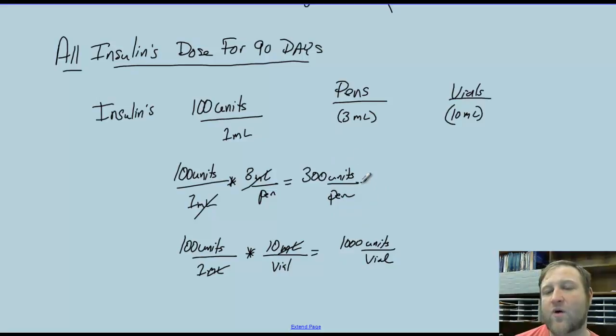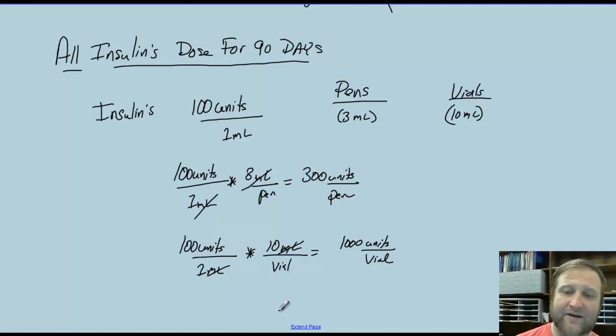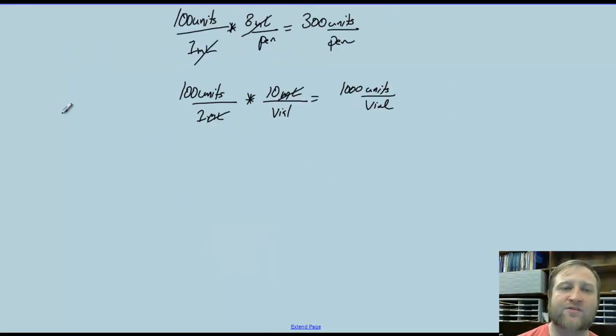If we look at vials, there are still 100 units per 1 mL, but we have 10 mLs per vial — so we will have 1,000 units per vial.